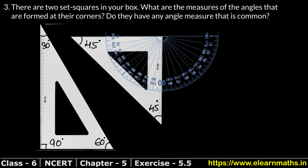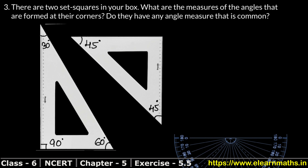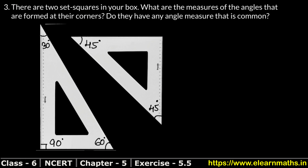Now let's look at the next corner. The 0 degree is on the other side, and the line is on the lower side. This is exactly 90 degrees. So we have to know it is 90 degrees.